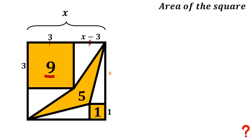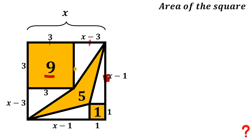And the whole thing is x, and this part is 1, so this part measures x minus 1. Doing the same thing: this is 1, so this is x minus 1; this is 3, so this is x minus 3. This side length is 3, this is also 3, and this side is 1, this side is 1.